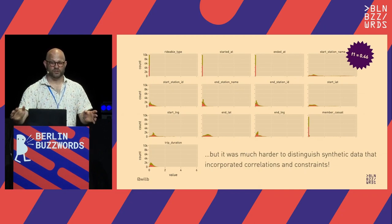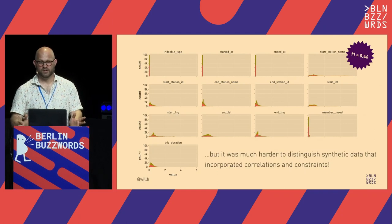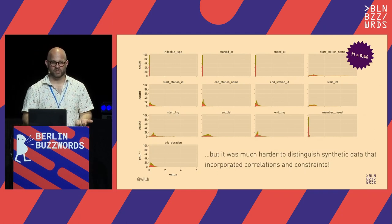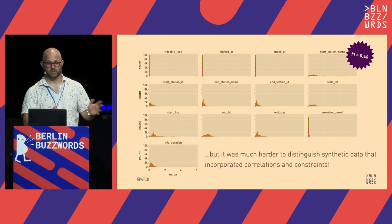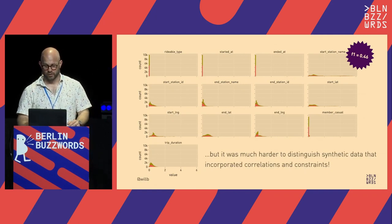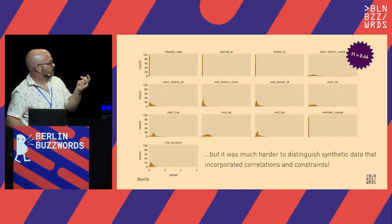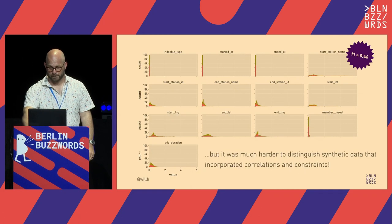We've produced data that looks a lot more like data from the real world, even though we've done something very simple. We've just taken into account things that we know and things that we learned from looking at these feature importances, in order to capture those relationships more faithfully.